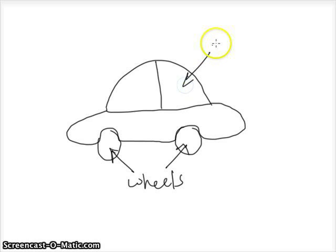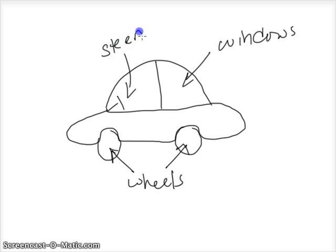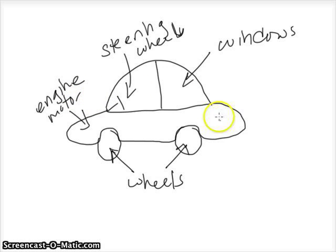We need to be able to see through it so that we know where we're going, so it's got windows. We need to tell it where it's going or the direction of where we're moving the car, so we need the steering wheel. We need only one steering wheel. In order for it to move and start, we need an engine, we need a motor.